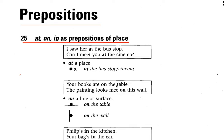You can see in this section — at, on, in — as prepositions of place. So at, in, on: these are prepositions but they show place. So we call them prepositions of place.